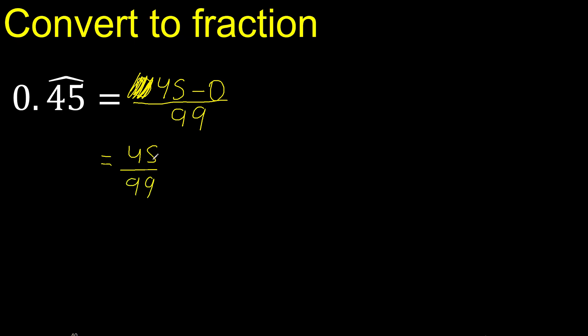Subtract, and this can be simplified because it can be divided by the same number. Divided by 3: 45 divided by 3 is 15, divided by 3 is 5. Divided by 3 gives 11. Finish.